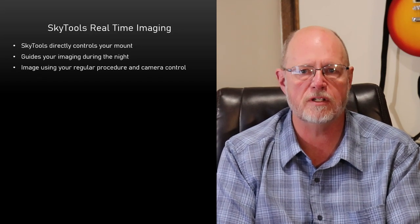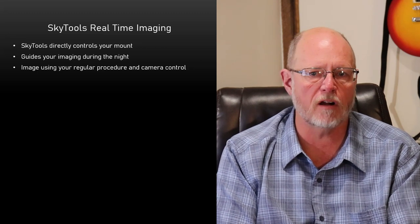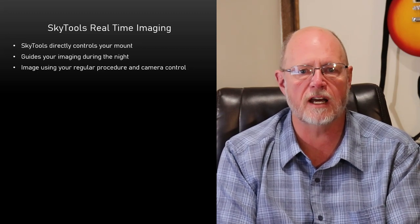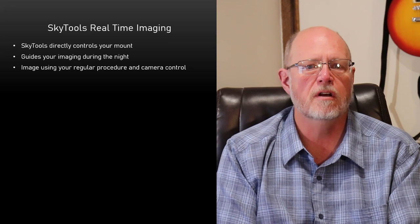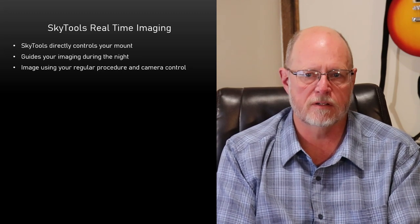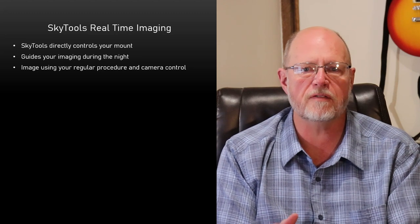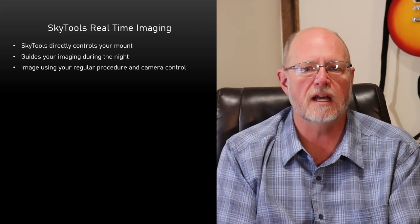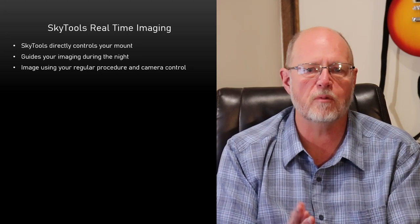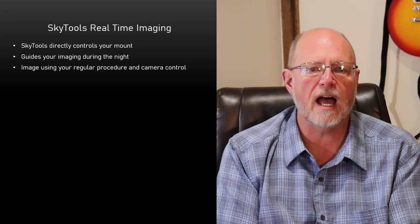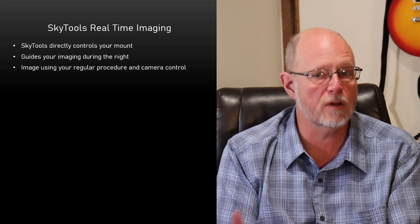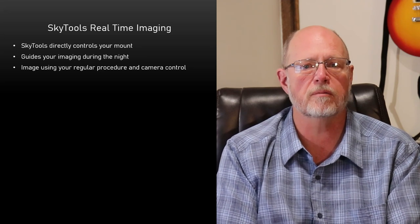If you're using a mount directly connected to SkyTools, you will use the real-time imaging tool. Once it gets dark, you will connect to your mount, and SkyTools will guide you through the steps that will optimize your images. SkyTools will slew the telescope, and you will focus, set the filter, center the field, and set exposure times in the same way that you already do. How exactly that will work for you depends greatly on your control system.